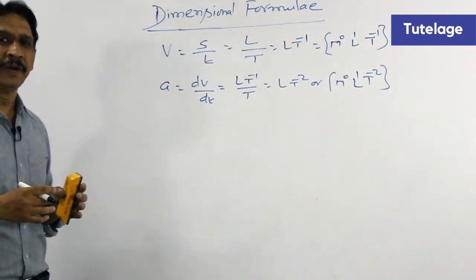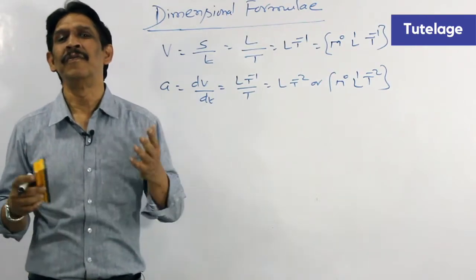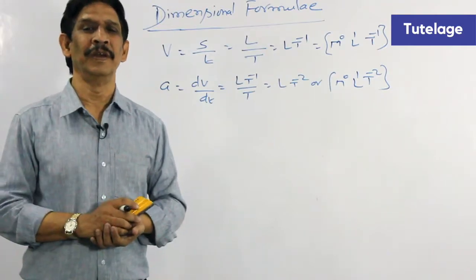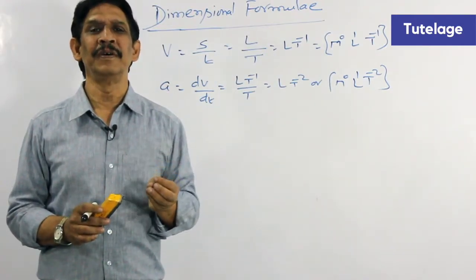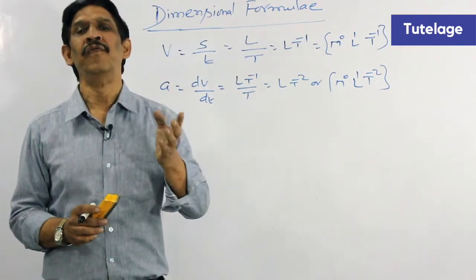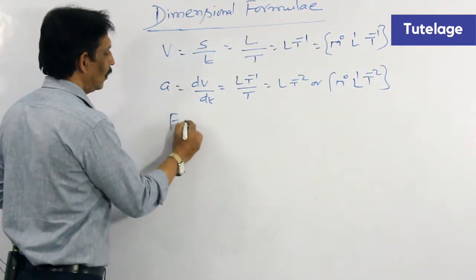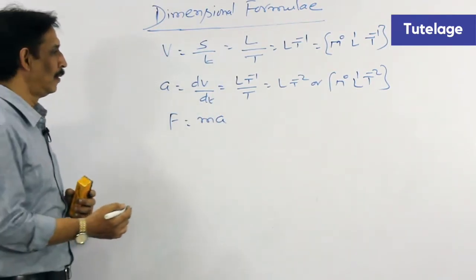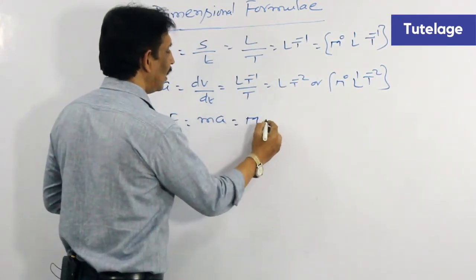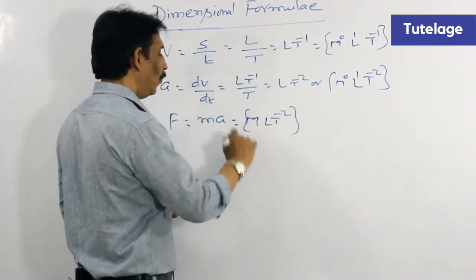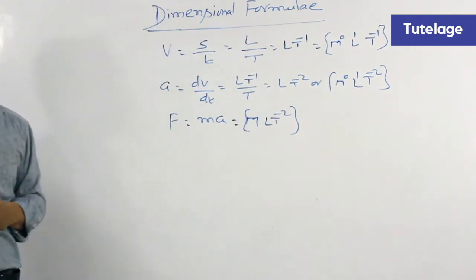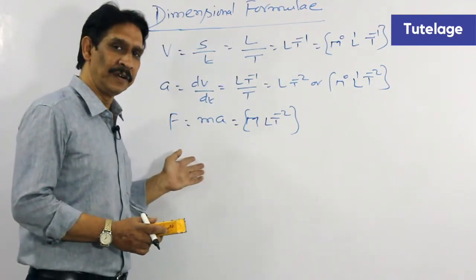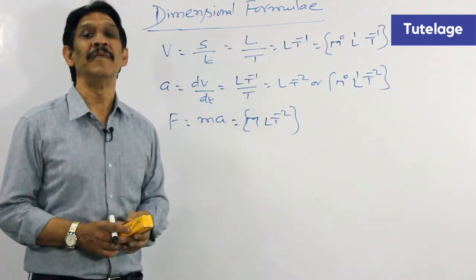Now the most important dimensional formula is for force. We come across force in so many formulae, so every student must remember the dimensional formula of force. Force is equal to mass into acceleration. Mass is M and acceleration is L T minus 2, so the dimensional formula for force is M L T minus 2. Better to remember forever — the dimensional formula for force is M L T minus 2.